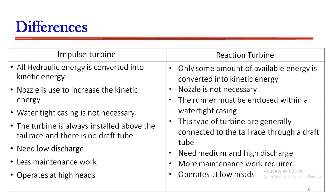Now let's have a look at the differences between impulse turbine and reaction turbine. In impulse turbine, all hydraulic energy is converted into kinetic energy, whereas in reaction turbine, only some amount of available energy is converted into kinetic energy. A nozzle is used to increase the kinetic energy in impulse turbine, but a nozzle is not necessary in reaction turbine. Water-tight casing is not necessary in impulse turbine, whereas the runner must be enclosed within a water-tight casing in reaction turbine. The turbine is always installed above the tail race and there is no draft tube, whereas reaction turbines are generally connected to the tail race through a draft tube.